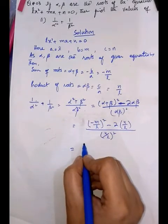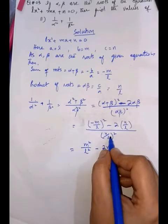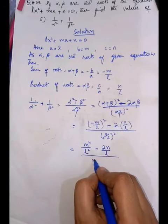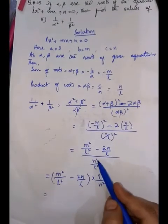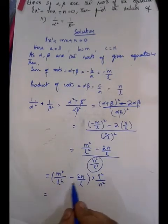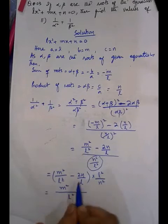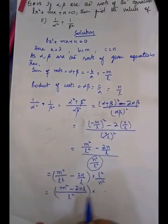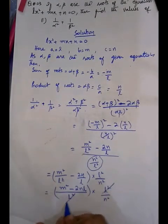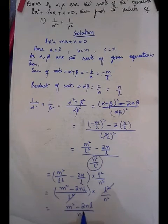When we apply the square, the minus sign cancels to give plus, so we get m²/l² − 2n/l in the numerator. The denominator is n²/l², which when brought to the numerator becomes l²/n². Taking LCM l² for the numerator terms: l² cancels with l² leaving m²; and l cancels one l from 2nl, leaving 2nl. So the final answer is (m² − 2nl) / n². The remaining parts you should do on your own. Take care, Allah Hafiz.